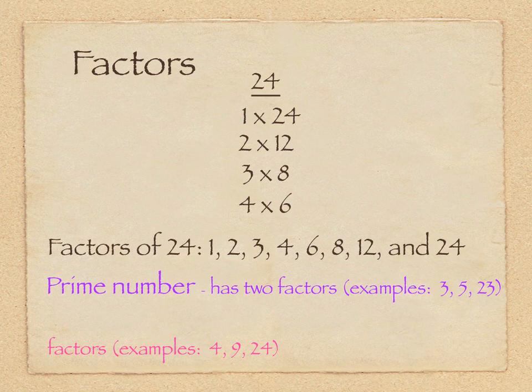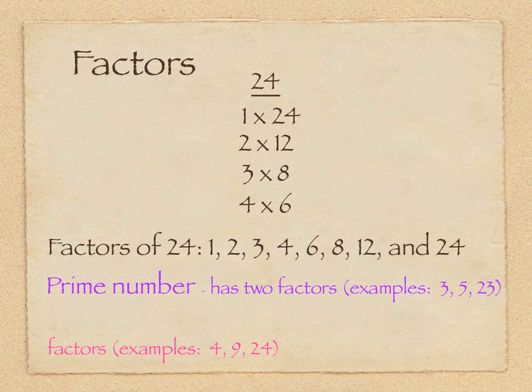We'll also go over what a prime number is and what a composite number is. A prime number has exactly two factors. For instance, the numbers three, five, and twenty-three. The only factors that three has are one times three, so the number times itself. What makes a number prime is that it can only be multiplied by one to get that product.